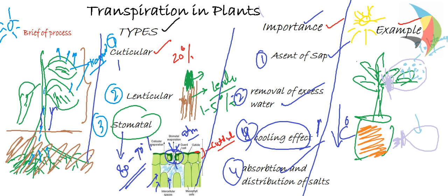This indicates a small example of the transpiration process in the plant, and how water is moved from the lower portion to the upper portion. This is a brief about the transpiration process in the plant. In the next section we will again discuss more about the plant structure. Thank you very much.